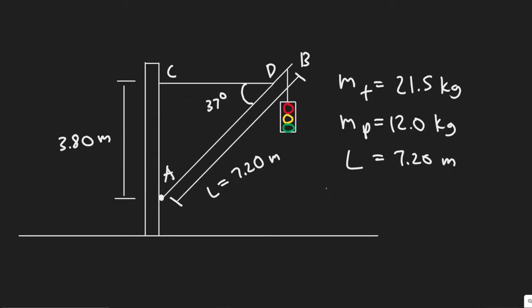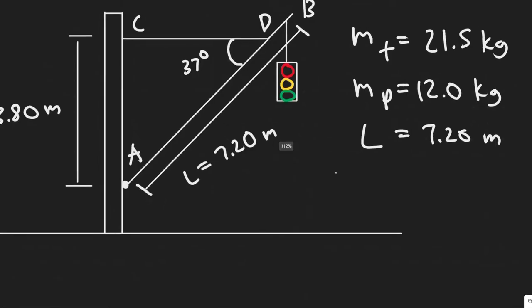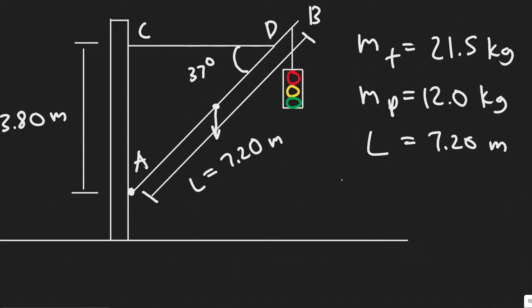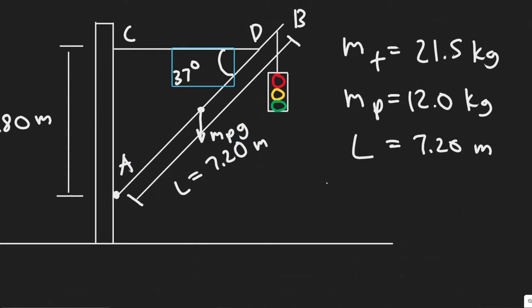The first thing we want to do in order to solve this problem is draw the free body diagram. At the middle of the pole, there's going to be a force due to gravity. We can call this M_P times G — since we're dealing with a pole, at the center there's going to be some force due to gravity straight down.